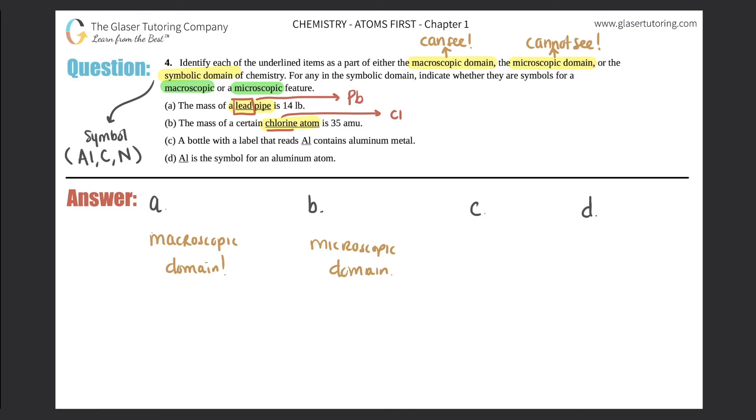Moving on, c: a bottle with the label that reads Al contains aluminum metal. Al—it's a symbol, and Al is the symbol for aluminum. So right off the bat, it's a symbolic domain. Now we just got to figure out: is it part of the macroscopic or microscopic feature? Same definition applies. Macro means that we can see it, micro means we cannot.